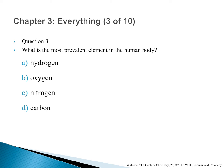Question 3: What is the most prevalent element in the human body? A. Hydrogen. B. Oxygen. C. Nitrogen. D. Carbon. The correct answer is B — oxygen. Oxygen makes up the most significant percentage of both soil and the human body.